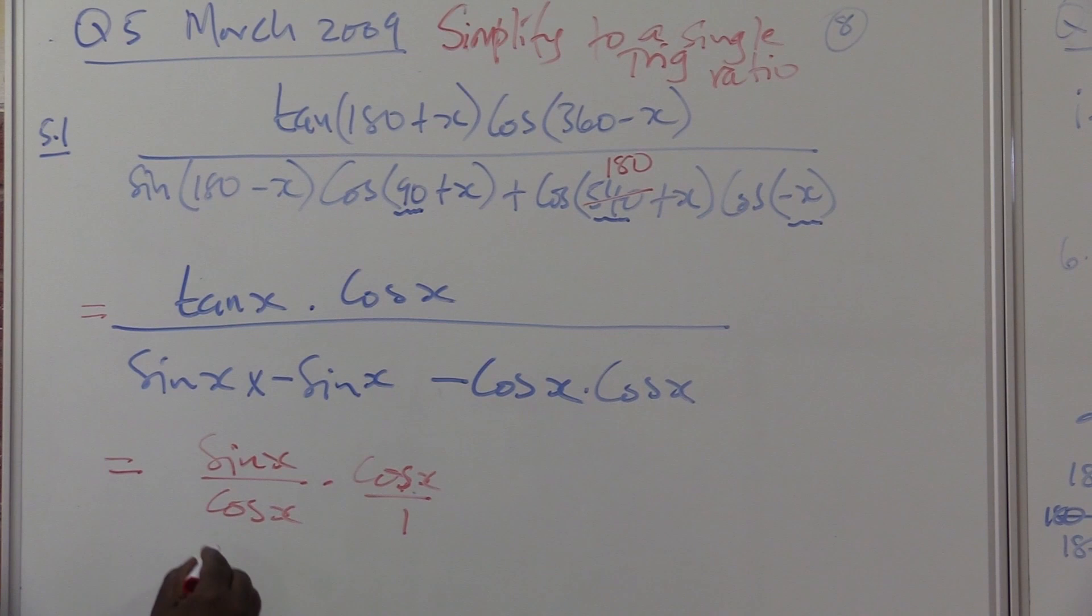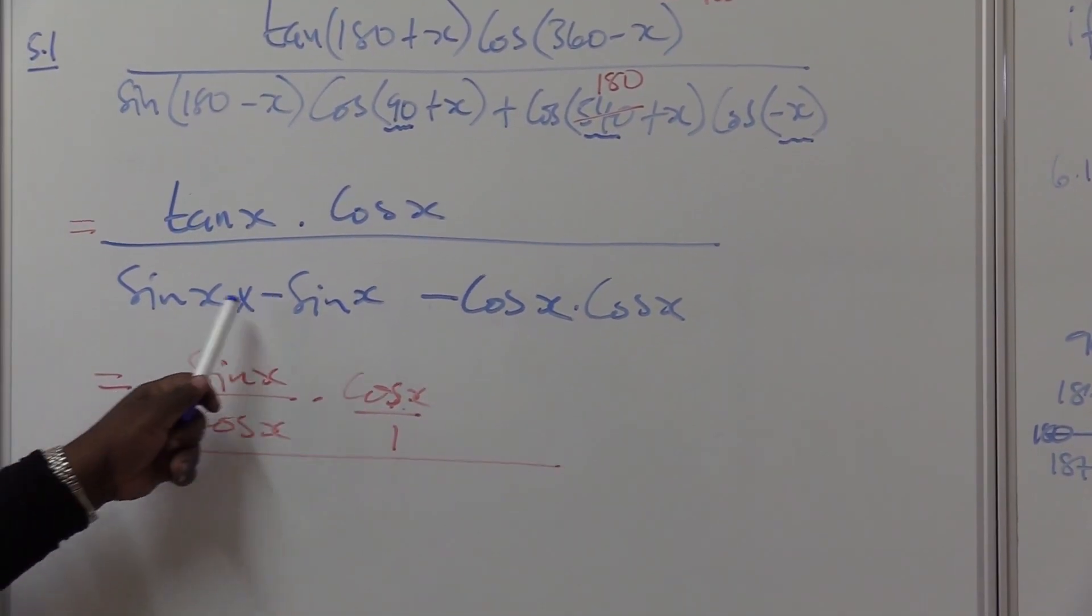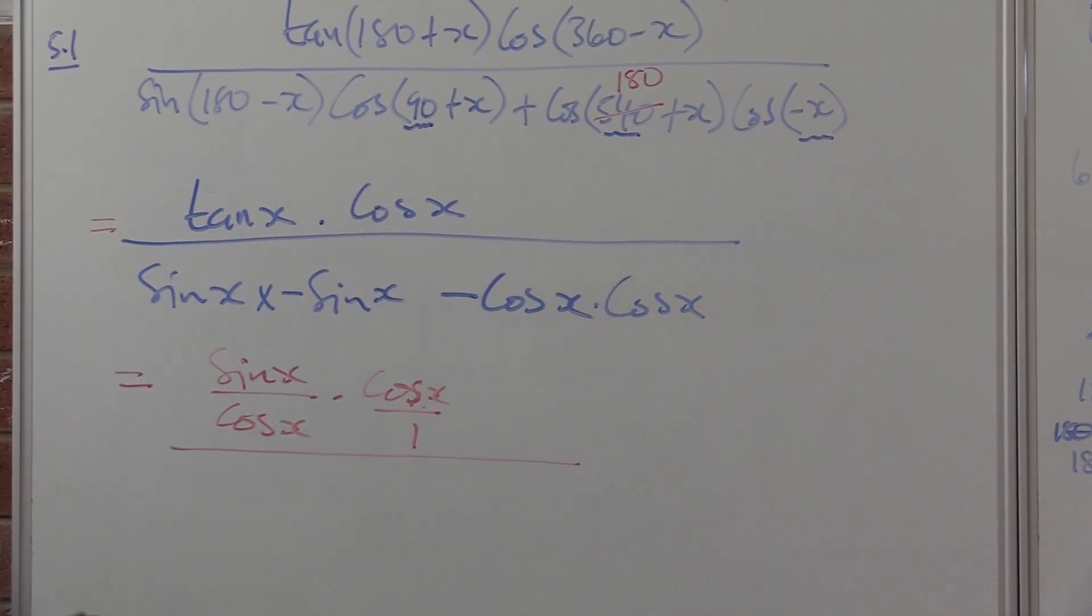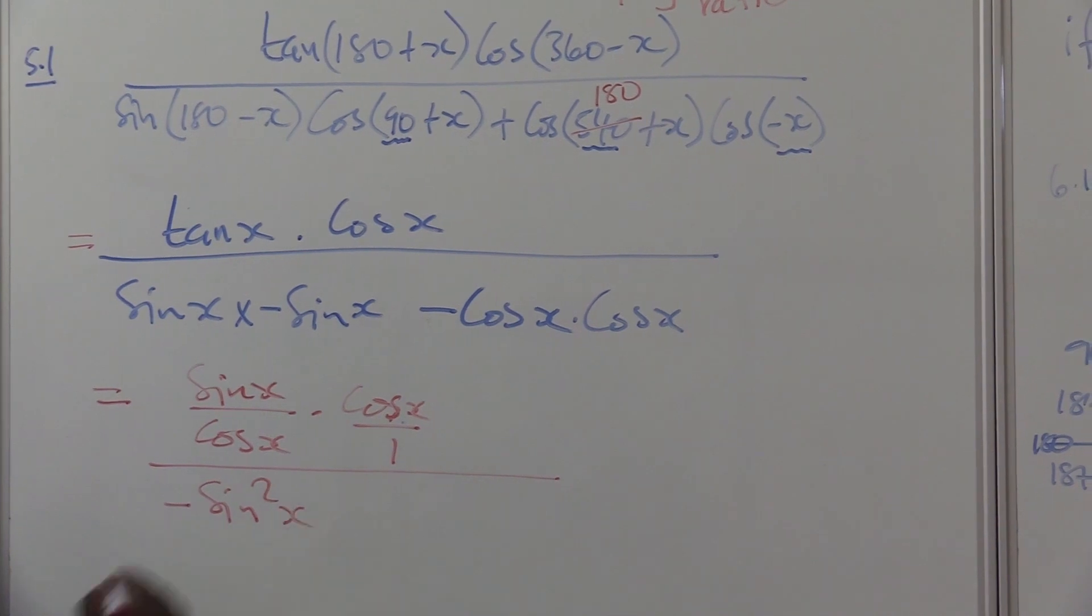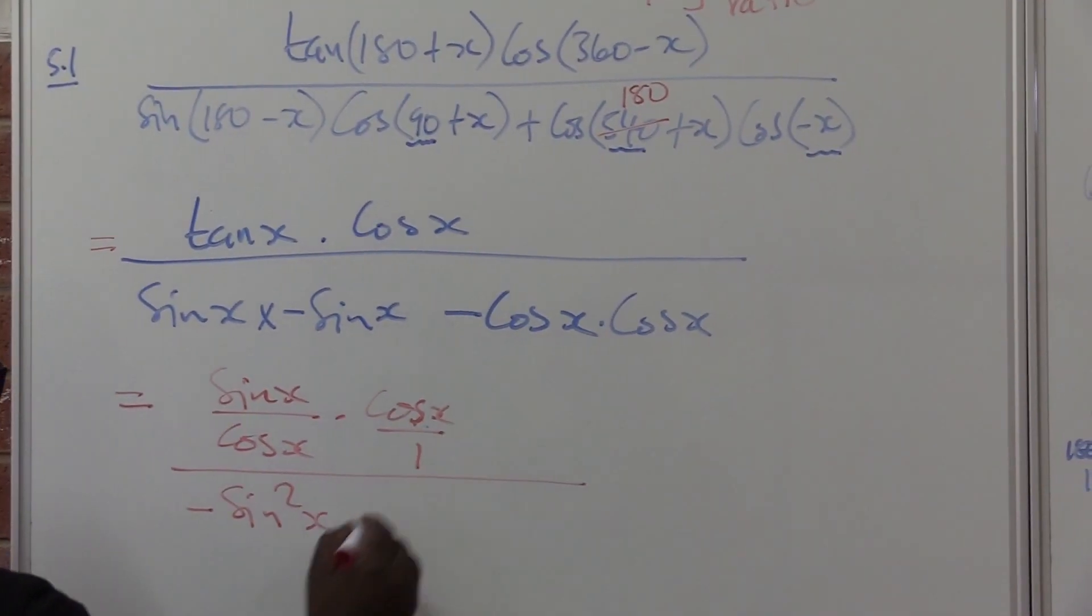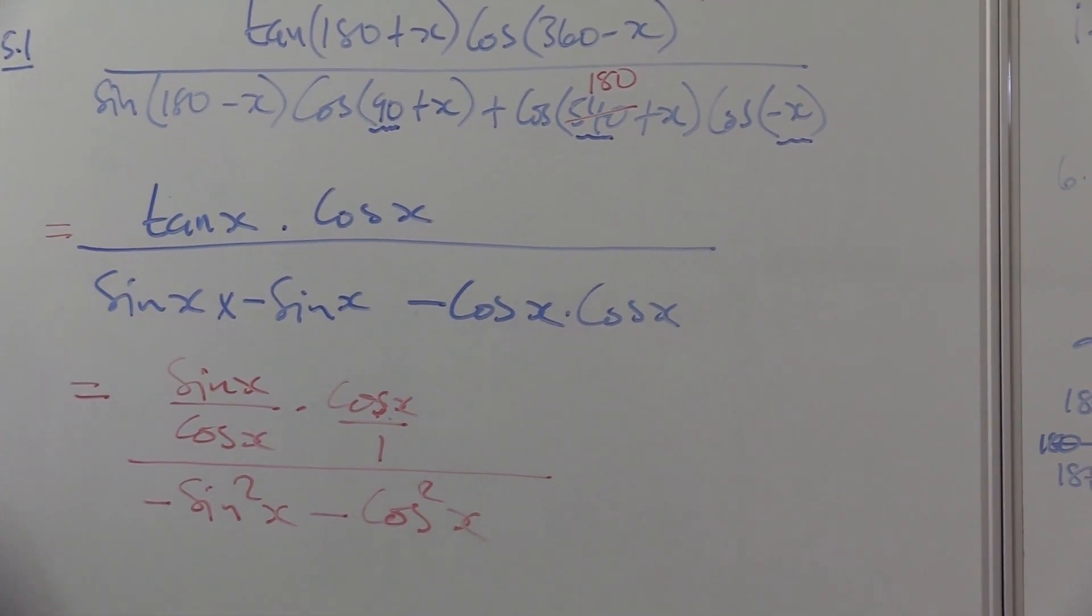Let me look at my denominator. Okay, this times that is minus sin x. This times that is minus cos x. That's what I have.